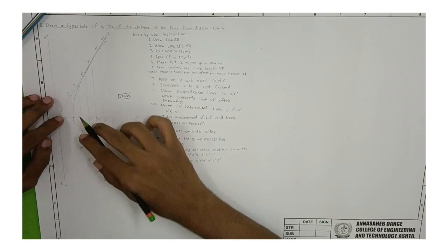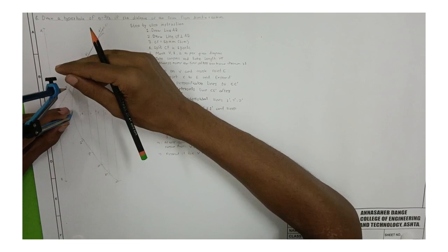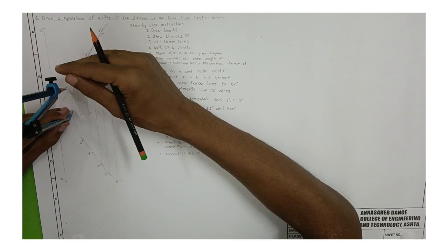In between CF, mark five points of same length. Then name the second point as V. Then take the distance between V and F and place it on V and make an arc.